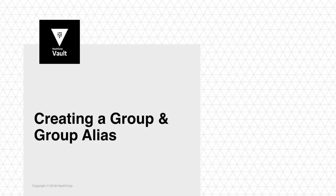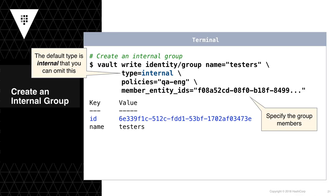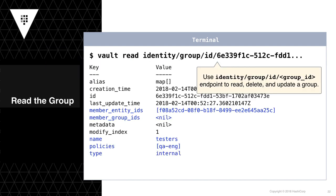In this section, we'll review how groups and group aliases are created and managed. Let's walk through an example where we'll create both internal and external groups. We'll start by creating an internal group by running the command 'vault write' against the endpoint identity/group, specifying the name of the group, setting its type to internal, and attaching any applicable policies. Additionally, member entities can be added at the time of creation. We can inspect any existing groups by running the command 'vault read' against the endpoint identity/group/id and the group ID of the group we are interested in.